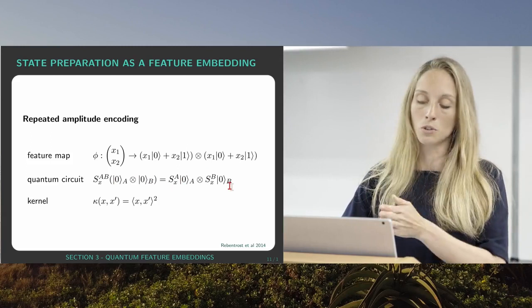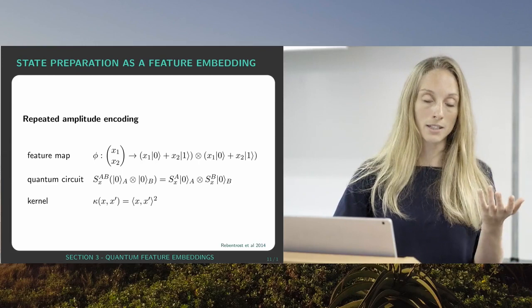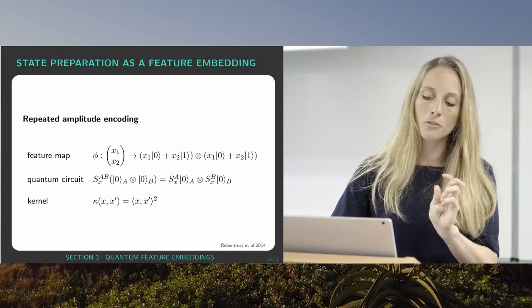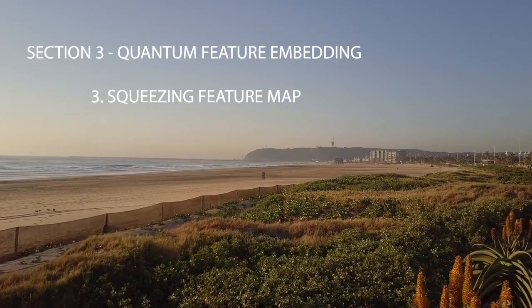And what happens then, we've got a quadratic kernel. And if we actually do this encoding not two times but d times, we get a kernel that is the inner product to the power d, which is basically a polynomial kernel but without an offset. With a couple of tricks you can also put in an offset here. So basically basis encoding gives rise to very sharp kernels, amplitude encoding gives rise to polynomial kernels.